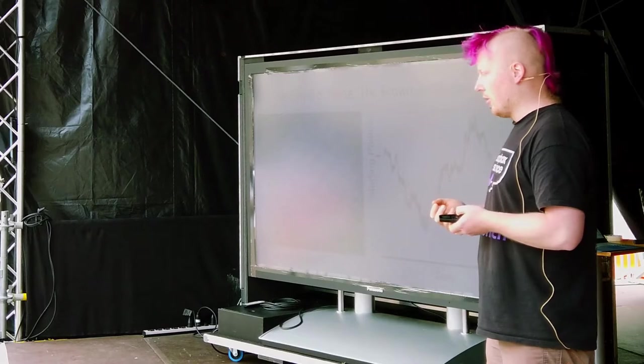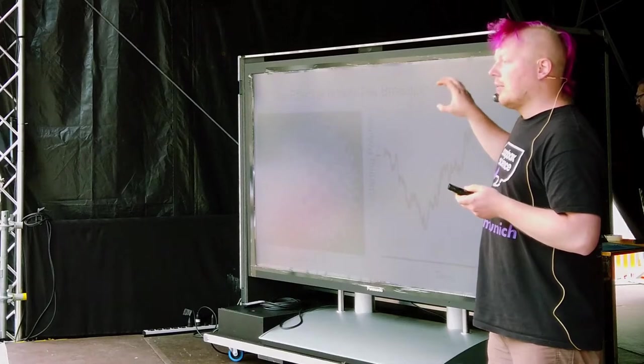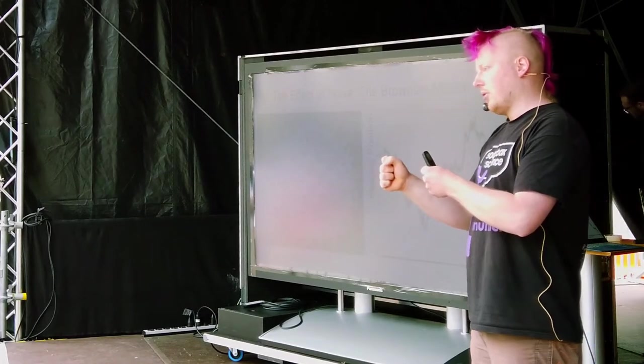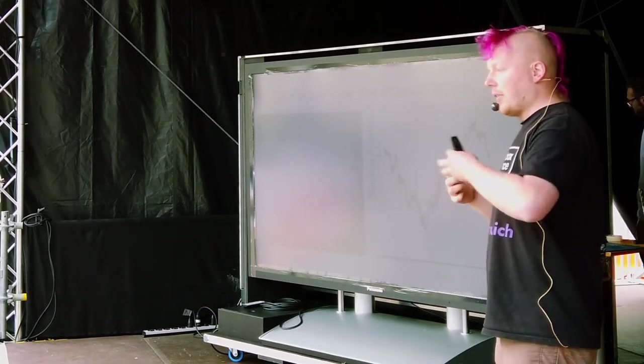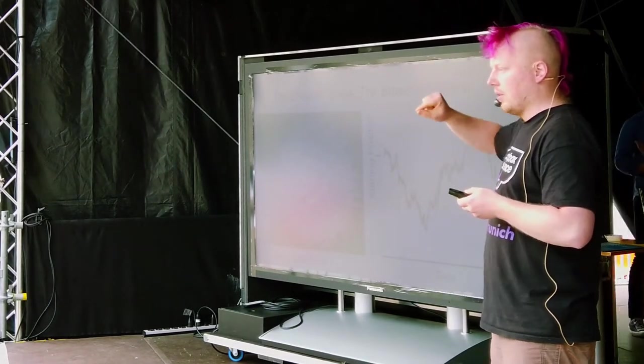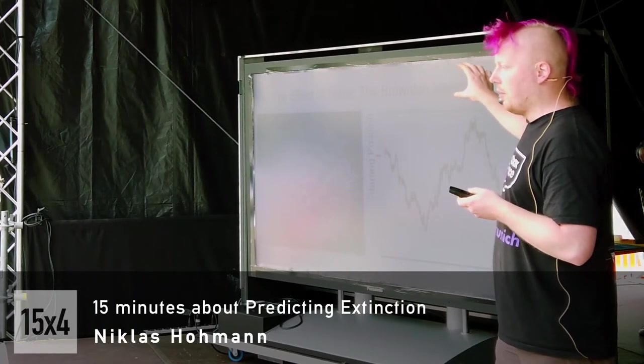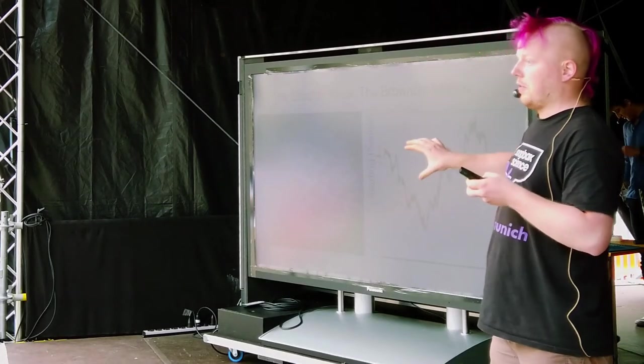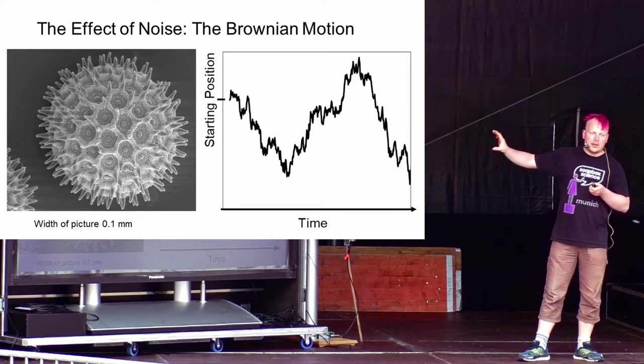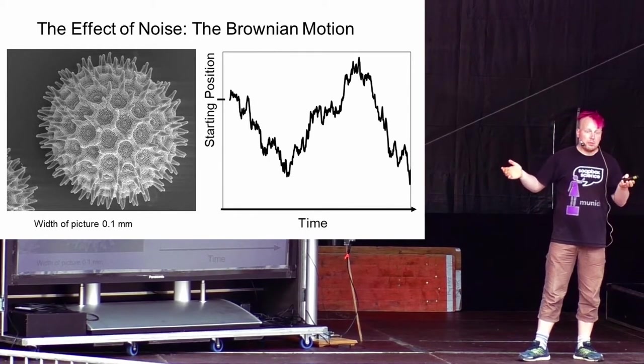But after a while, people thought into this and looked at the pollen more closely, and it turns out this is not that the pollen are alive, but they're randomly shuffled around by the water molecules. At some point more water molecules are bumping into the pollen from one side, it will move in the other, and at some other point, randomly more will bump from the other side. This Brownian motion is very common in all systems that are governed by a lot of background noise. For example, the stock market on short time intervals actually behaves like a pollen under a microscope.